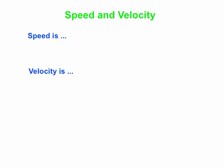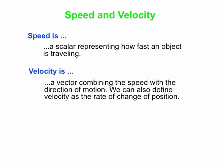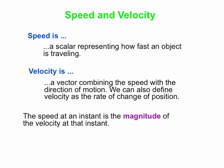Think about how you would define speed and how you would define velocity. Out on the street a lot of people use the two words interchangeably, but we are much more careful because they're actually not quite the same thing. Speed is a scalar — it represents how fast an object is traveling. Velocity, on the other hand, is a vector, so it combines the speed with the direction of motion. Another way to define velocity is as the rate of change of position. The speed at a particular instant is the magnitude of the velocity at that instant.